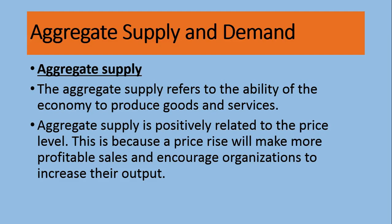The other side is aggregate supply. Aggregate supply refers to the total production that has taken place in the country — the ability of the economy to produce goods and services. This includes how much agriculture products like wheat, maize, fruits, and vegetables we have produced, how much we have produced in terms of industrial goods, and how many services have been produced — meaning what is the total capacity of production of the economy.